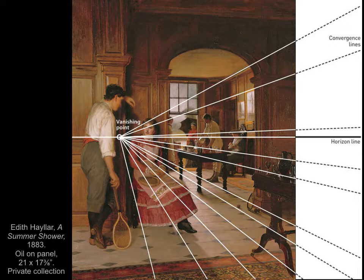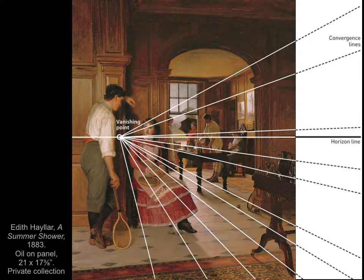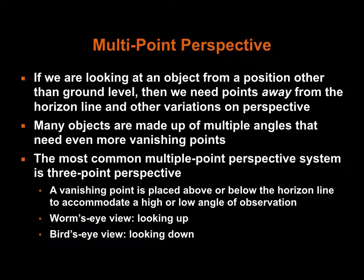Here you see the components of linear perspective that make the image so convincing. There is a horizon line bisecting the painting roughly midway up the height of the canvas. There is a focal point, labeled as a vanishing point, placed along the horizon line right between two figures in the foreground on the left. A number of implied lines create converging lines, also known as orthogonals, directing our gaze to the focal point. The artist combines arrangement, color saturation, size, and linear perspective to create a realistic-looking space.